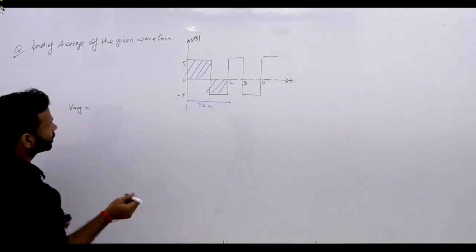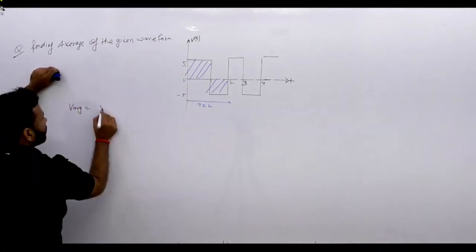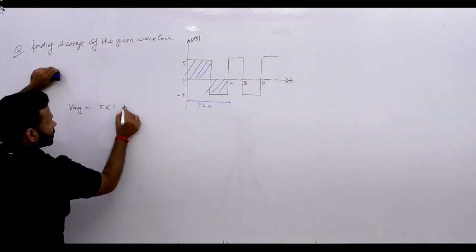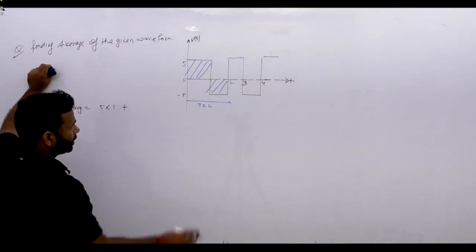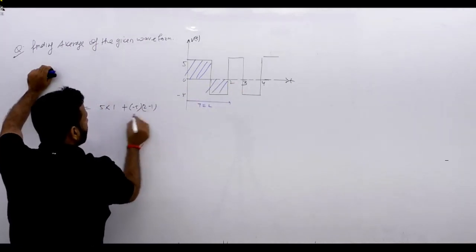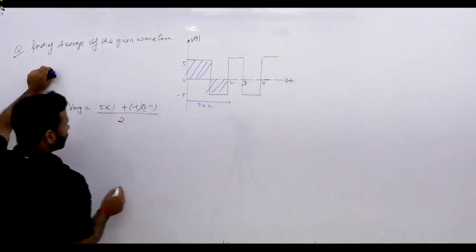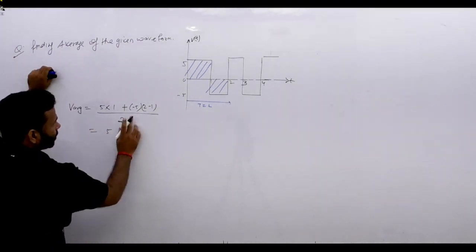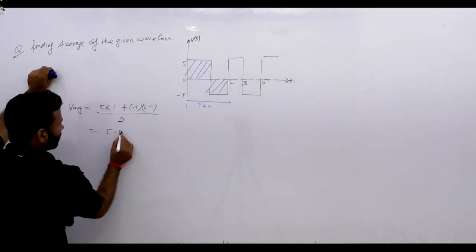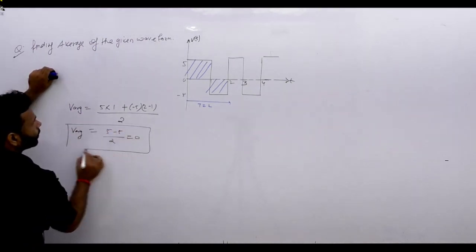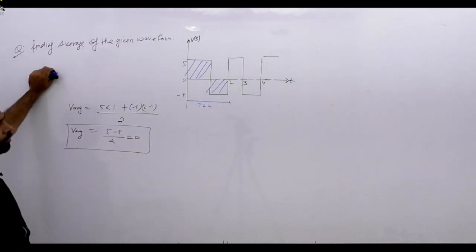Using the area method: length is 5, width is 1 (from 0 to 1), so area is 5. Then length is minus 5 and difference is 2 minus 1 equals 1, total time period is 2. So we have 5 and minus 5 times 1, giving 5 minus 5 equals 0. Average is zero for this waveform over a complete cycle.